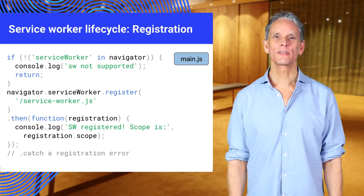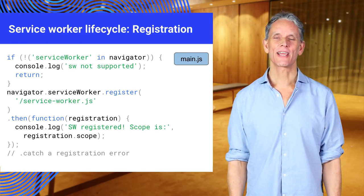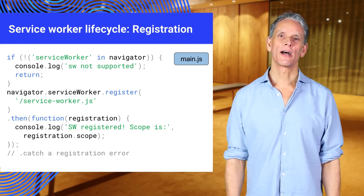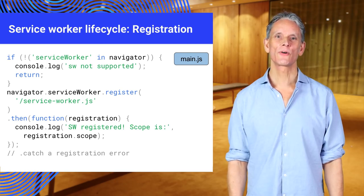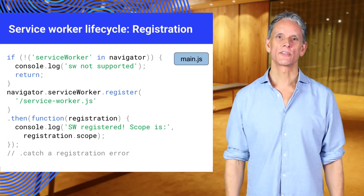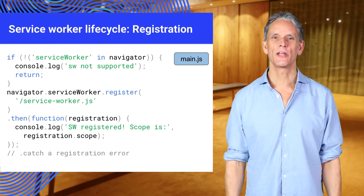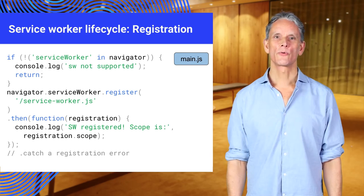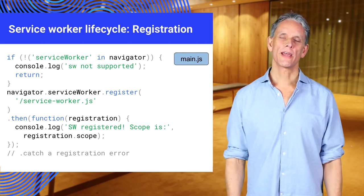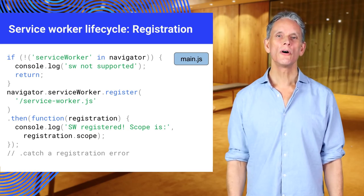For example, you could include a script tag in your site's index.html file, or whatever file you use as your application's entry point, with code similar to the one shown here. This code starts by checking for browser support by attempting to find service worker as a property in the navigator object. The service worker is then registered with navigator.serviceWorker.register, which returns a promise that resolves when the service worker has been successfully registered. The scope of the service worker is then logged with registration.scope. You can attempt to register a service worker every time the page loads, and the browser will only complete the registration if the service worker is new or has been updated.